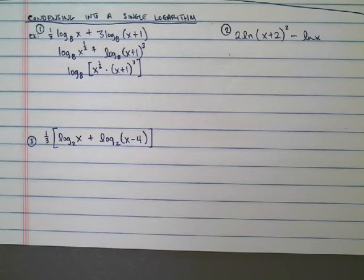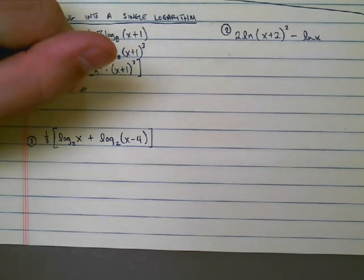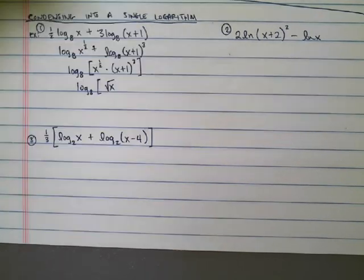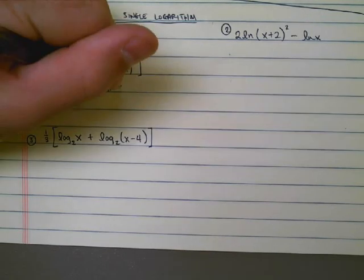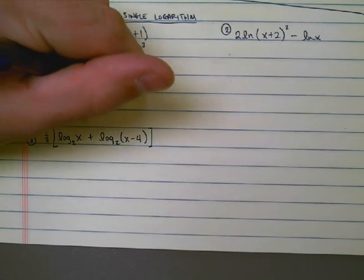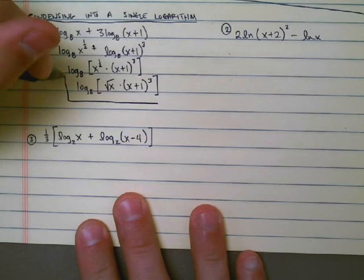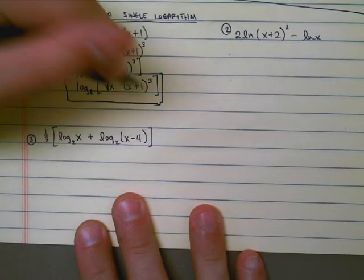And the last thing is, because I know what x to the 1/2 is, I think it would be preferable to write your answer as log base 8 of the square root of x, that's x to the 1/2, times (x+1) cubed. And now we have a single logarithm, base 8, and everything else is inside there.